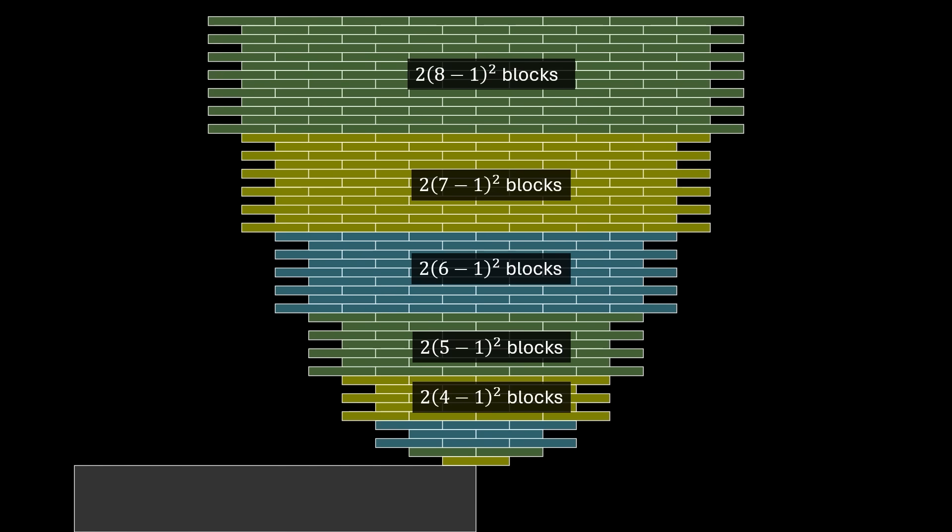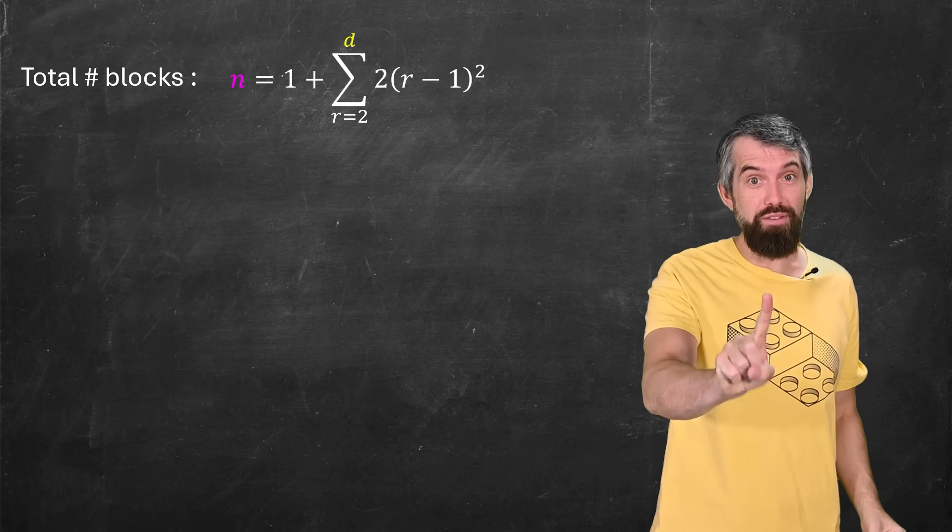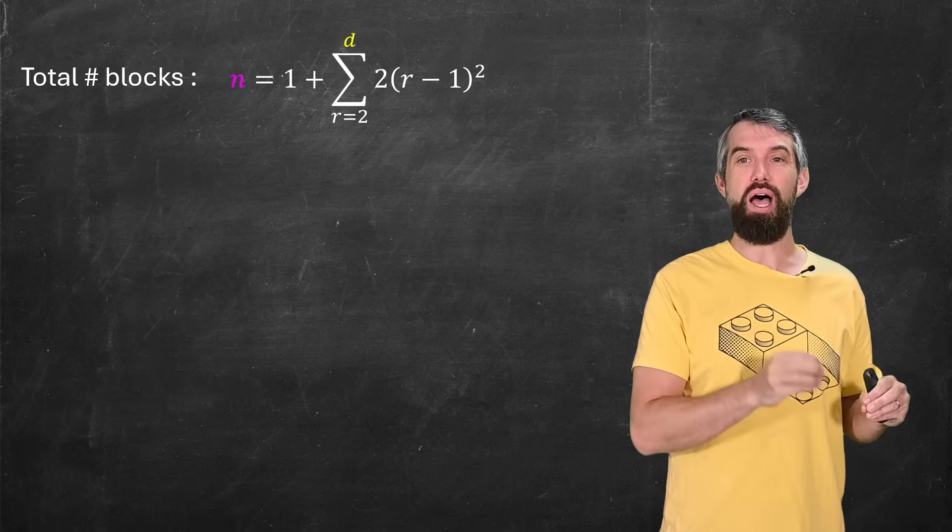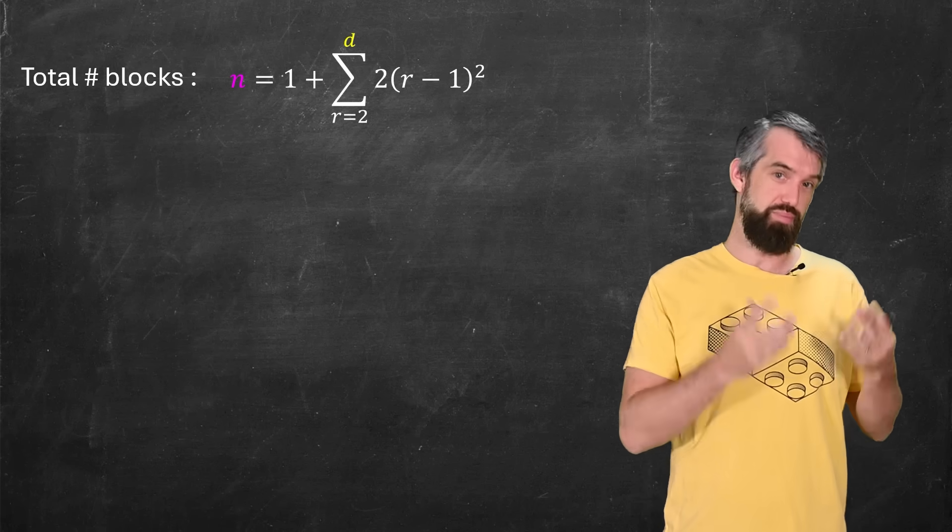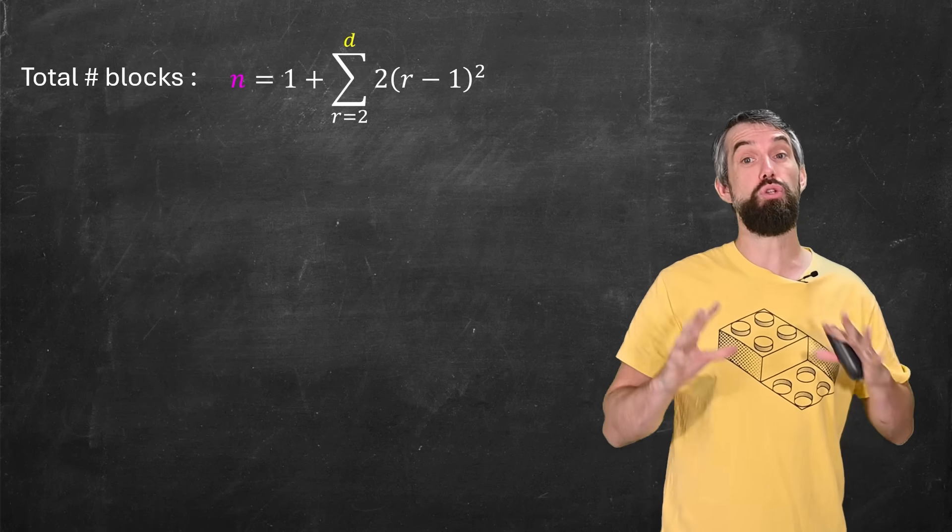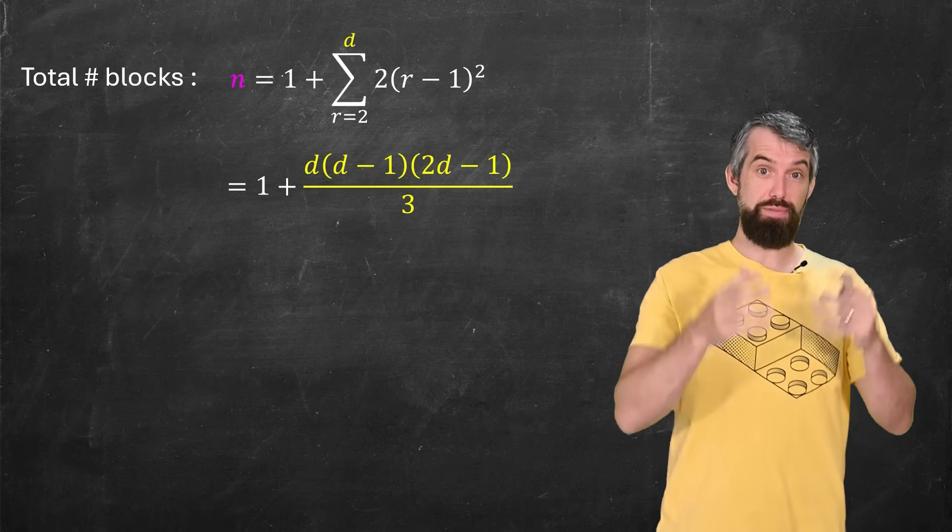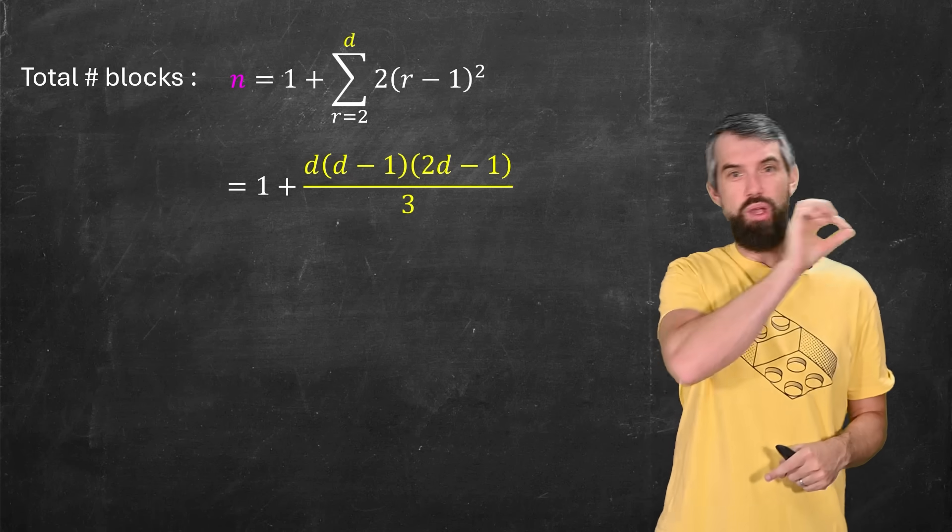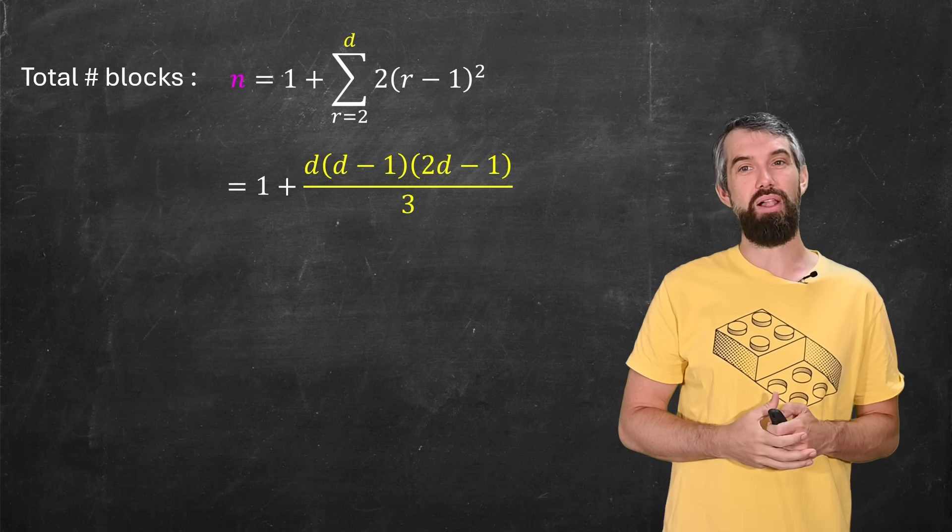So going back to our tower again, we can see that I have two times eight minus one squared blocks, then two times seven minus one squared blocks, and so forth. So the total number of blocks thus adds up to one for the block on the bottom, plus the sum of all of these R cells. There's D of them total, let's say, and so I have a sum from two up to D of two R minus one. And there's lovely formulas for all of these, so you can expand it out, and you get this cubic in D, the width of that very top cell.